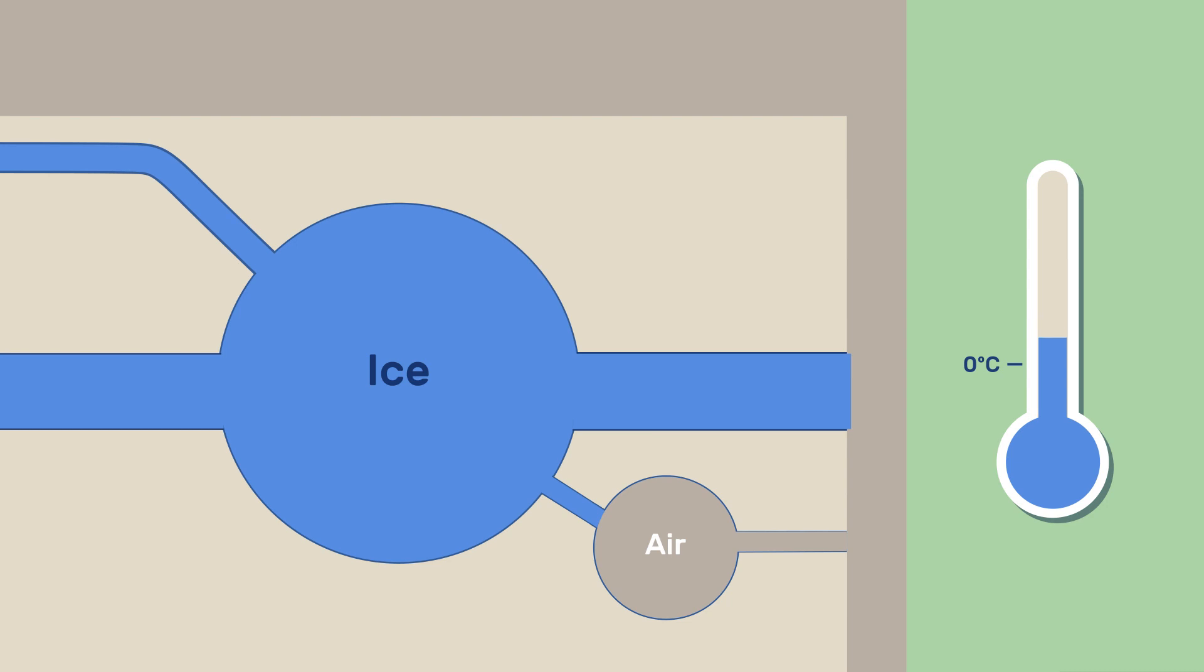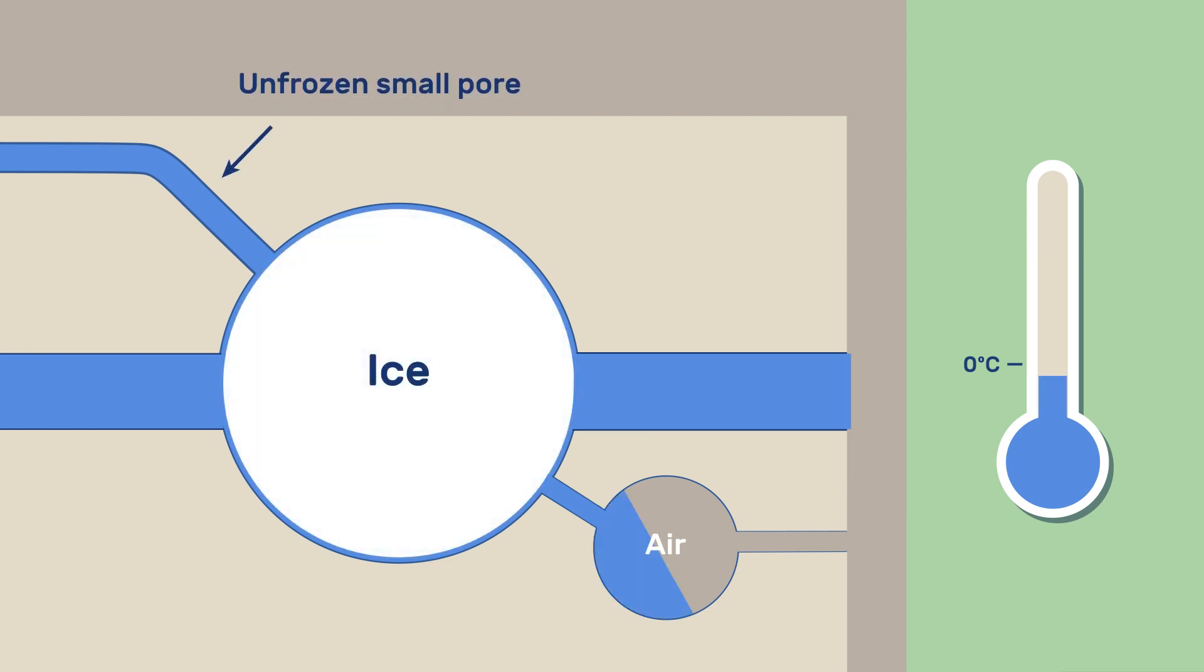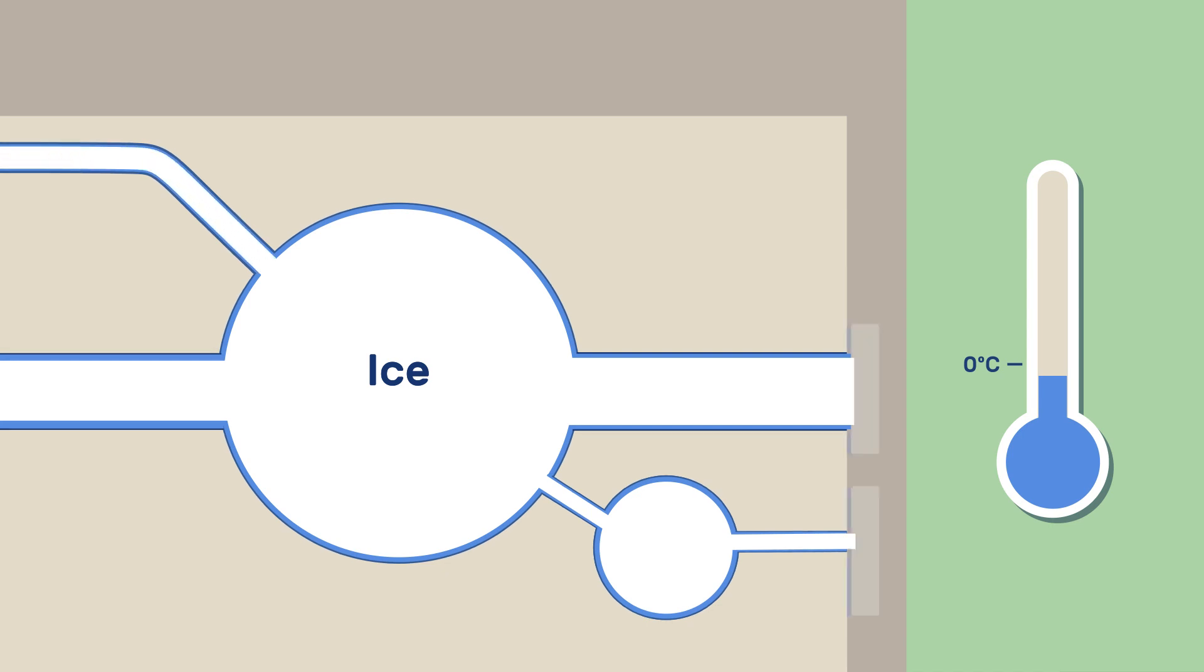If the temperature decreases uniformly throughout the body, ice will first form in the larger pore. As it grows, it pushes water into unfilled pores and to the outer surface where it may freeze and grow without restraint.